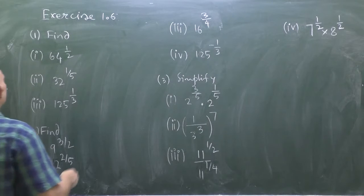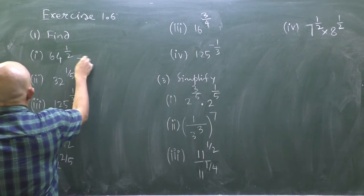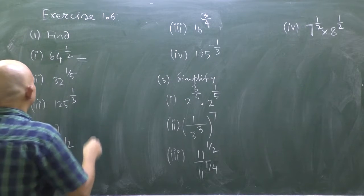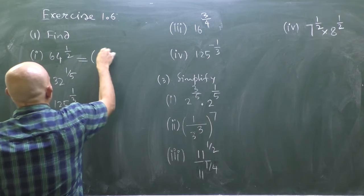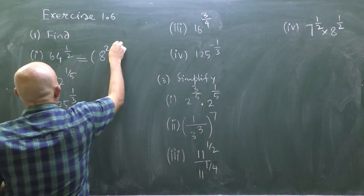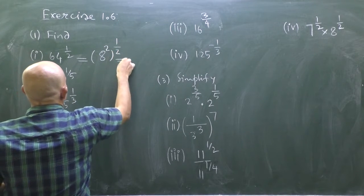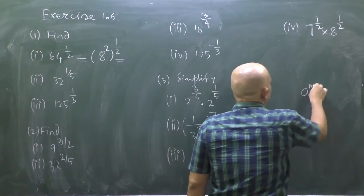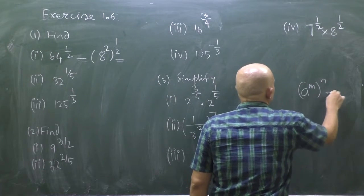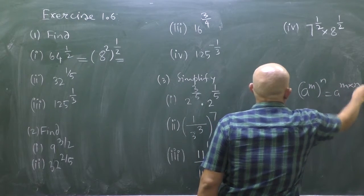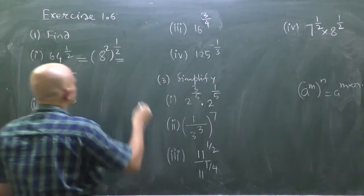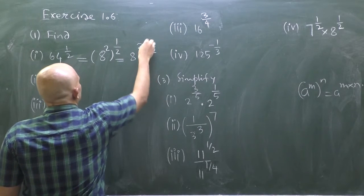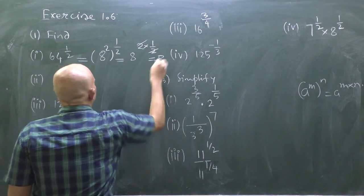In the first question we are asked to find the value. 64 is 8 squared, written as 8 to the power 1/2. Using the rule (a^m)^n = a^(m×n), it becomes 8 to the power 2 × (1/2). The 2s get cancelled and the outcome is 8.